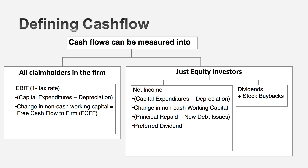A slightly more augmented version of dividends is to include stock buybacks, especially for U.S. companies which pay back a lot of their money through buybacks rather than dividends — think of that as augmented dividends. But there's a third way to estimate cash flows to equity investors: estimate potential dividends — what a company could have paid out rather than what it actually paid out. Essentially, we estimate how much cash is left over after every other conceivable need has been met.